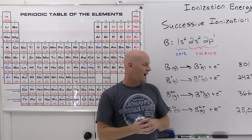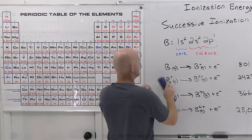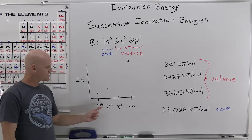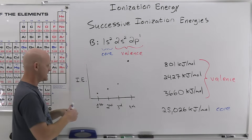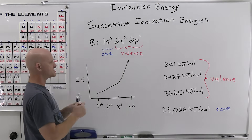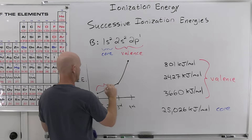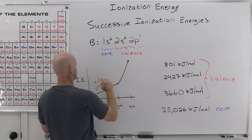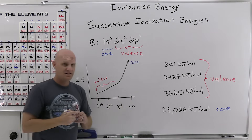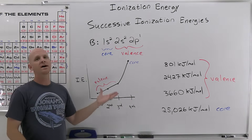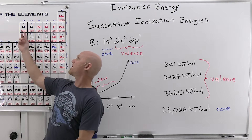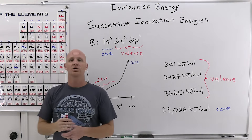This can also be shown graphically: ionization energy increases from first to second to third, then a massive jump to the fourth. Once you see that big jump, you know you've moved from valence to core electrons. From a graph like this, you should recognize the element has three valence electrons — most likely boron or aluminum.